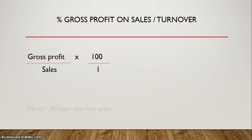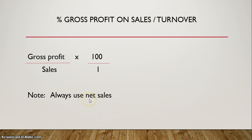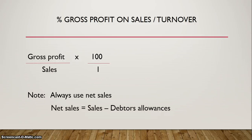One important thing you need to know is that you always use your net sales. When a business sells goods, some of the goods may be returned — that is known as debtors' allowances. So when you calculate the net sales, you take your sales less your debtors' allowances.